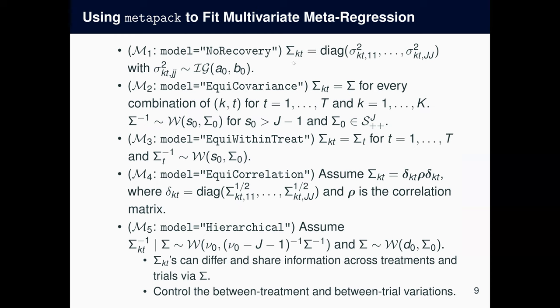First, no recovery. This means that we're not going to attempt any covariance recovery. So the sigma_KT is assumed to be a diagonal matrix. The second one is equi-covariance. This means that sigma_KT can be a matrix, not a diagonal matrix, but it will be the same covariance matrix for all KTs. And the third one is equi-within-treatment, which relaxes the homogeneity assumption in model two a bit and assumes that the covariance matrices can be different for different treatments.